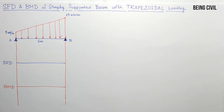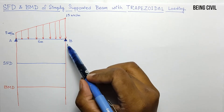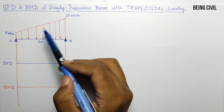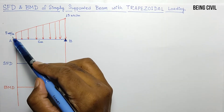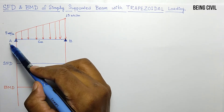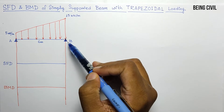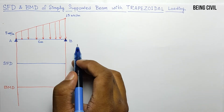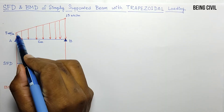Hello everybody, welcome to Being Civil. In this video we'll draw the shear force and bending moment diagram of a simply supported beam with trapezoidal loading. The trapezoidal load has intensity 5 kN/m at point A and 15 kN/m at point B, and the length of the beam is 6 meters. For simplicity, we can divide this trapezoid into two parts.